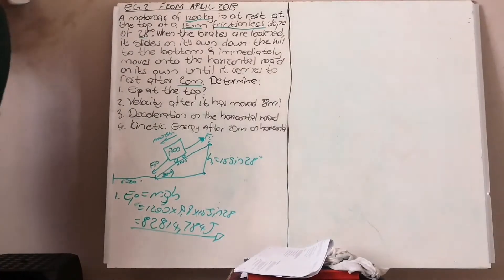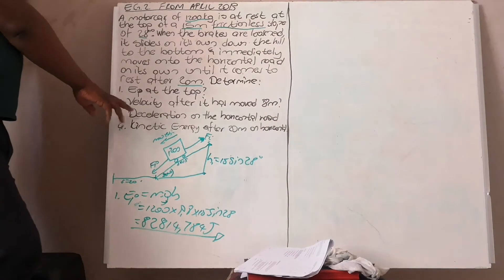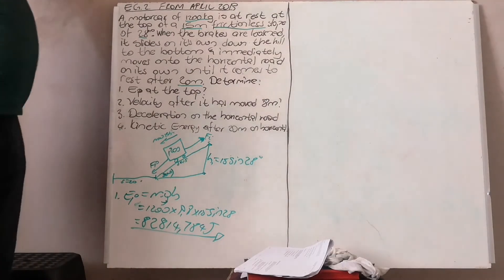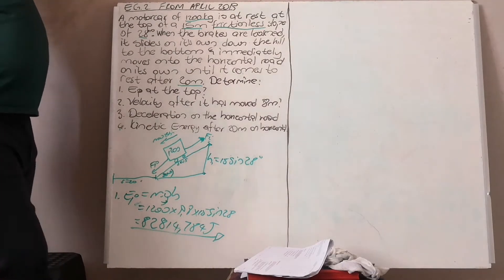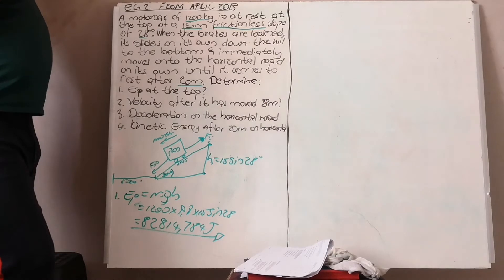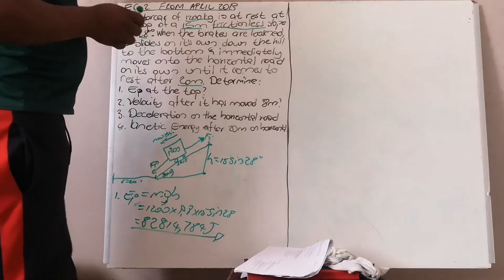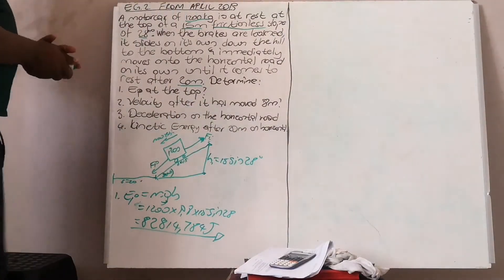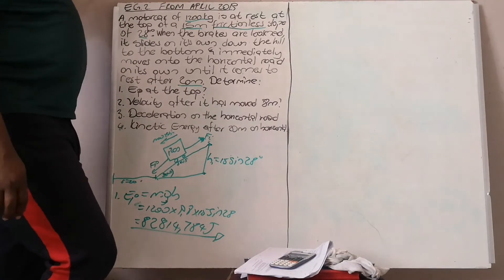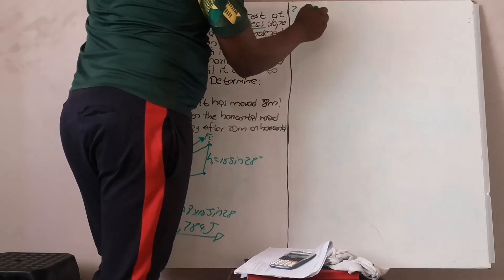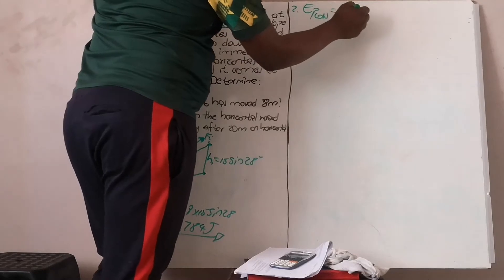That is the potential energy at the top. Second question: calculate the velocity after the object has moved 8 meters along the incline. Use the law of conservation of energy to calculate the velocity. EP loss is equal to EK gained.